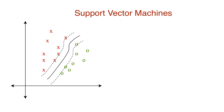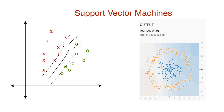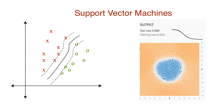Why are support vector machines so versatile? If you watched my last video, you would probably already know the answer: kernelization. SVM makes use of the kernel trick to model nonlinear decision boundaries. Before we see how, let's set the groundwork for this and understand what we're dealing with.